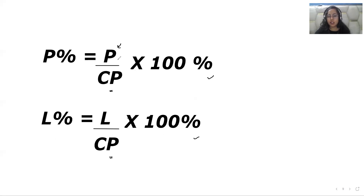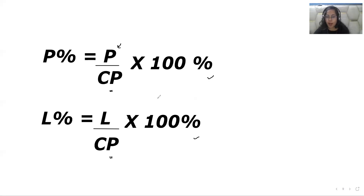As you can see in this formula, it uses profit, CP, and 100. In some questions they give you the value of cost price but not the value of profit, so first you need to find the profit and then calculate the profit percentage. The same applies in the case of loss. So let's apply this formula and learn how to use it.